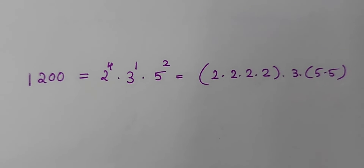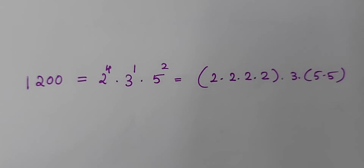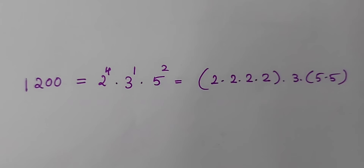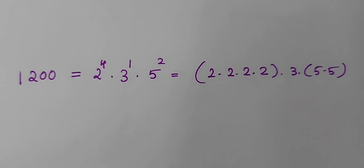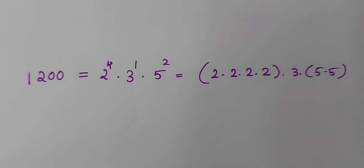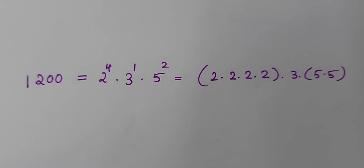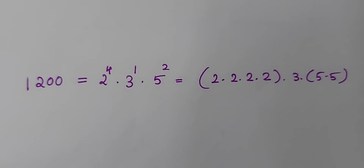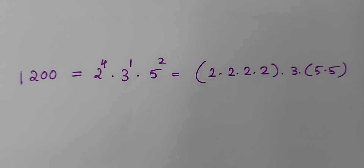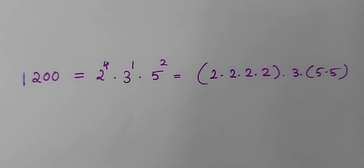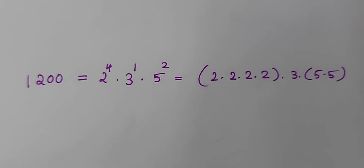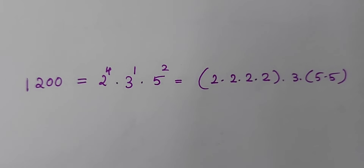You can change the order. For example, you can write it as 3 raised to 1 into 2 raised to 4 into 5 raised to 2, or you can write it as 5 raised to 2 into 2 raised to 4 into 3 raised to 1. So the order doesn't matter — there will always be four 2s, one 3, and two 5s. That's where the uniqueness part comes in.